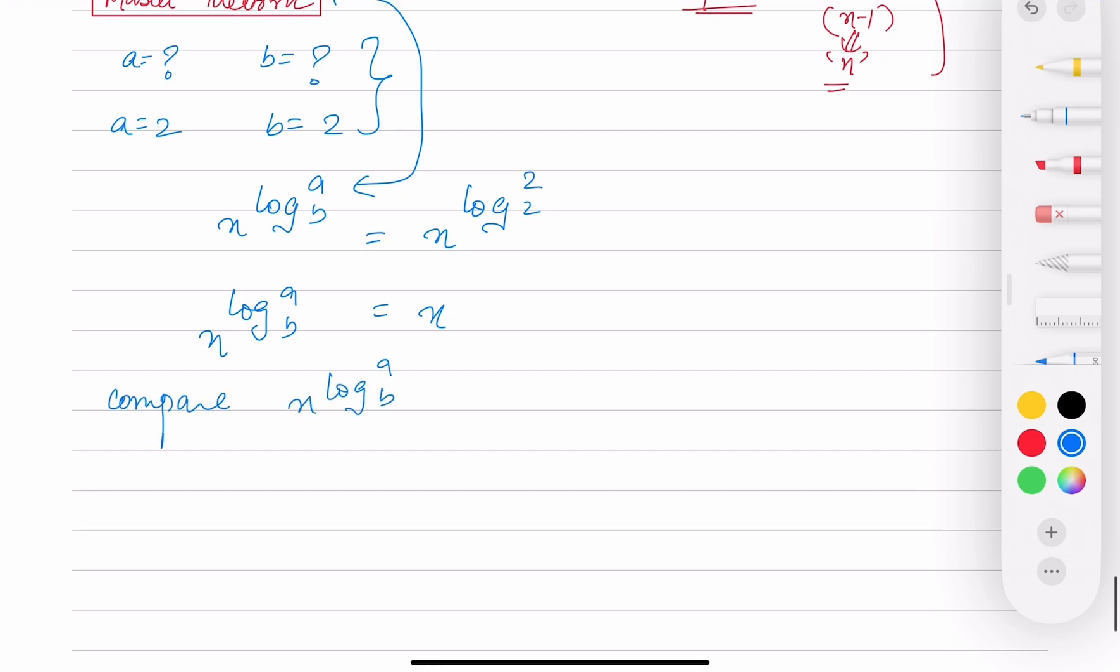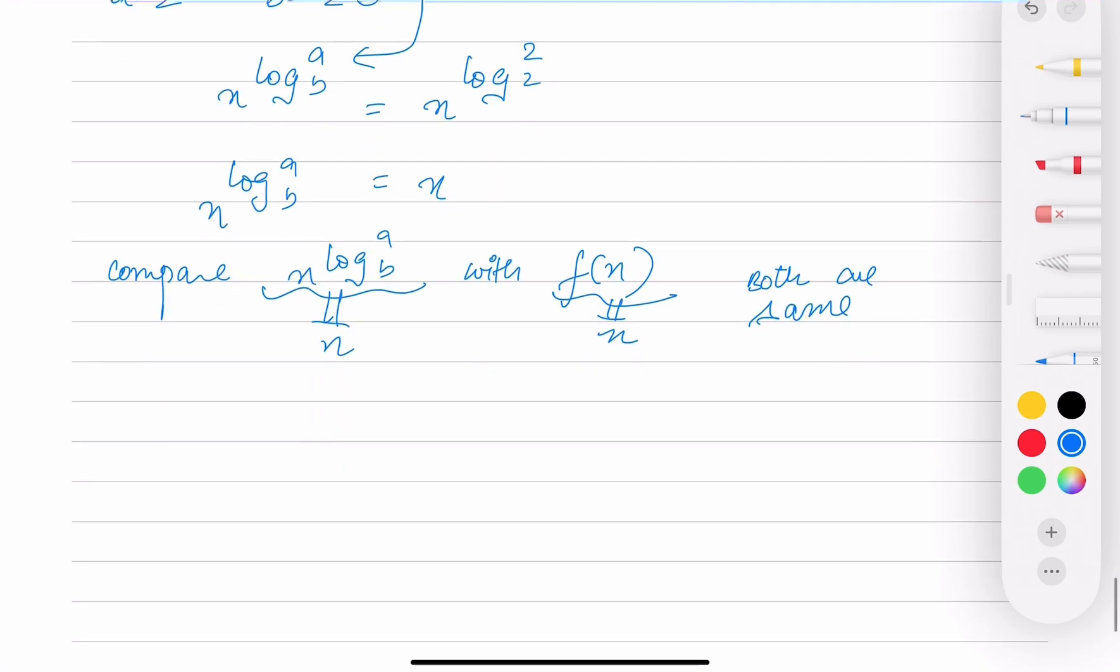n^(log_b(a)) - if you compare, what you need to do is compare n^(log_b(a)) with f(n). So this is n, this is n, so both are same.